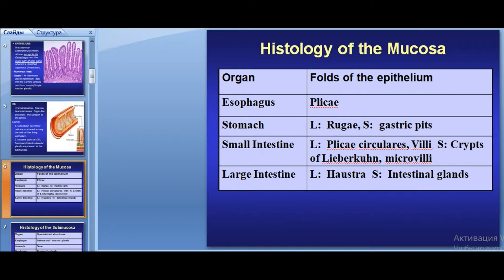Different elements of relief are found in different organs. In the esophagus there are longitudinal pleats. In the stomach there are rugal pleats, gastric pits, and mammillary areas. In the small intestine: plicae circulares, villi, crypts, and microvilli. In the large intestine: semilunar pleats and intestinal glands.